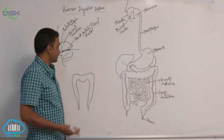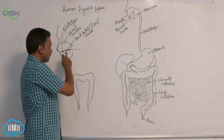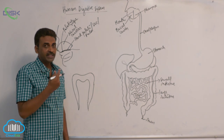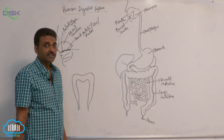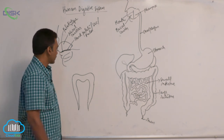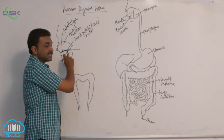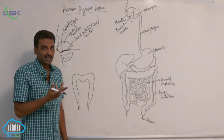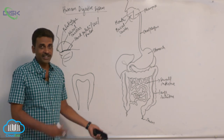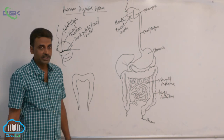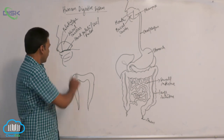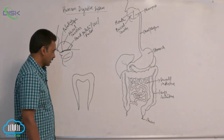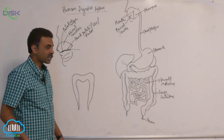Let us see the teeth — the structure of teeth inside the buccal cavity. Inside the buccal cavity there is tongue and tooth. We already discussed about the tongue. Now let us see the structure of tooth.